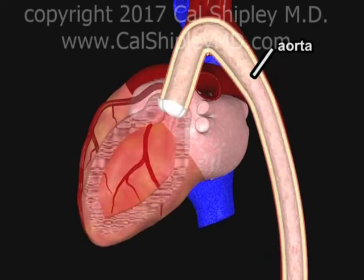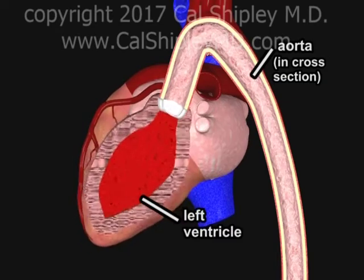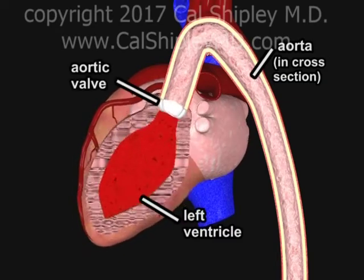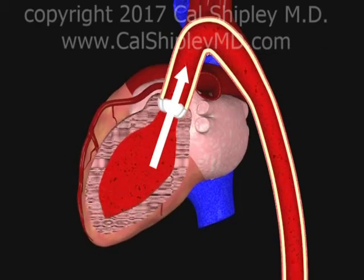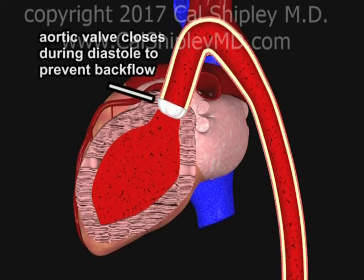Looking at a view of the heart from the patient's left side, we can see the aorta and left ventricle in cross-section, as well as the aortic valve. From this viewpoint, we can again note the opening of the aortic valve during systole to allow blood flow into the aorta, and closure of the valve during diastole to prevent backflow.